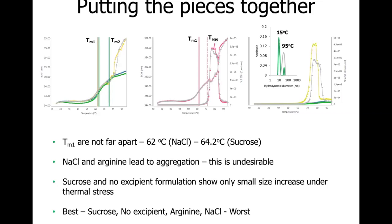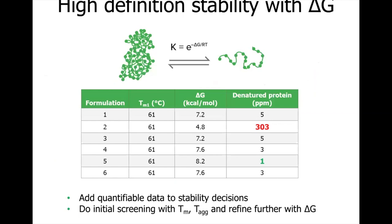Sometimes in formulation screening, if formulation alterations are subtle — for example, very small pH changes or variation in excipient concentration — we may get conditions that look identical by TM and even T-Ag, and you cannot differentiate between them. Delta-G adds an additional level of information to stability assessment by quantifying stability and determining the amount of denatured protein present in a protein sample at equilibrium and at ambient temperatures. This means we can use Delta-G to further refine formulations after first screening with TM and T-Ag.